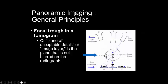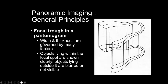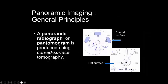The general principles of panoramic imaging: there is a focal trough in the tomogram, which is the plane of acceptable detail — the image layer that is not blurred on the radiograph. The x-ray moves in one direction while the film moves in the opposite direction. Objects within the focal trough are shown clearly; objects lying outside are blurred or not visible. A panoramic radiograph is produced using curved surface tomography.